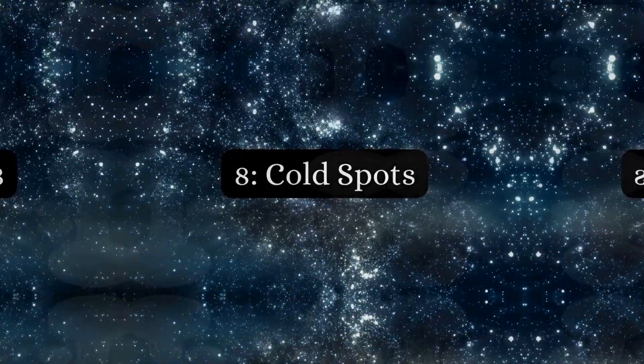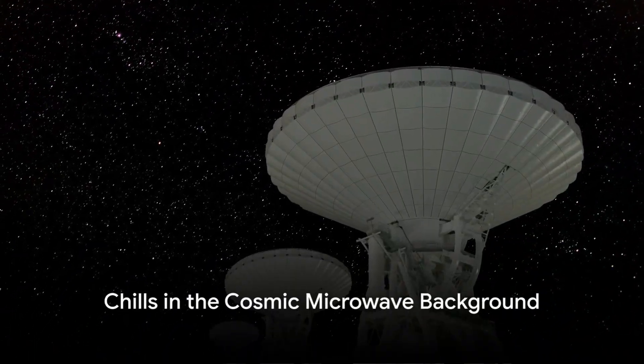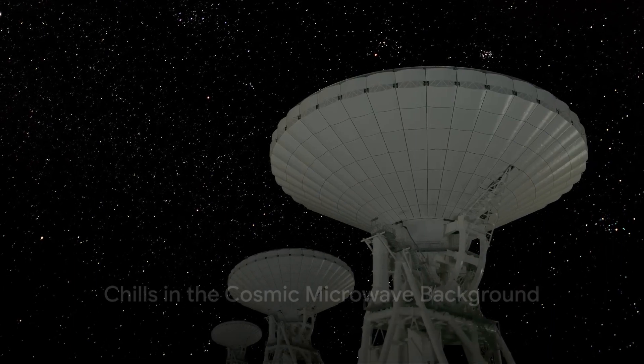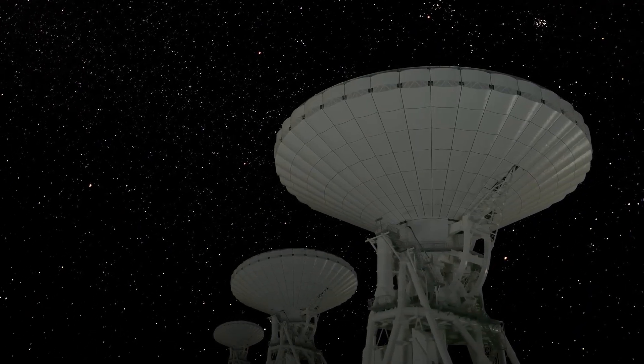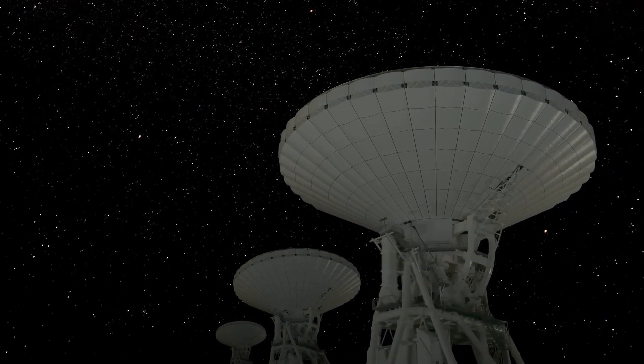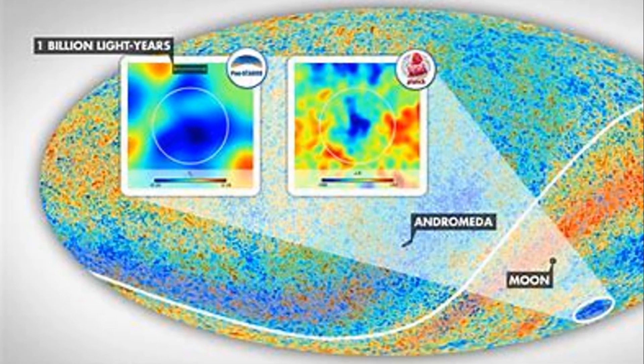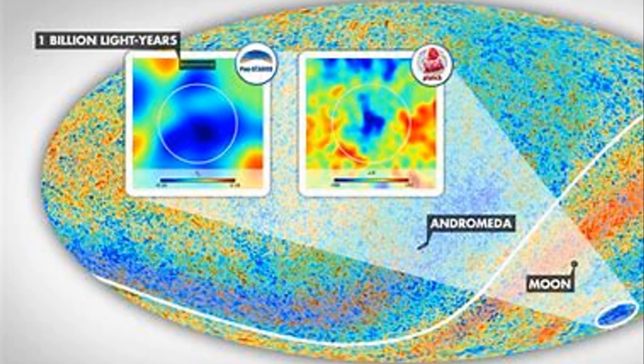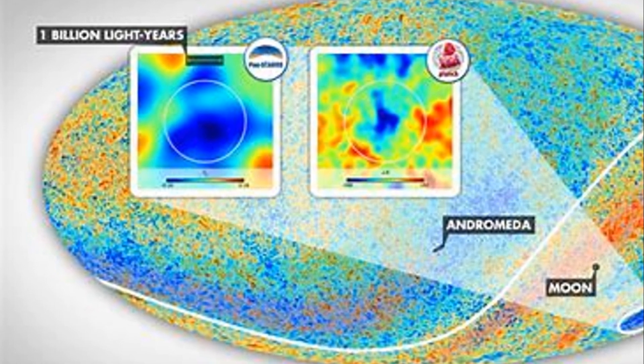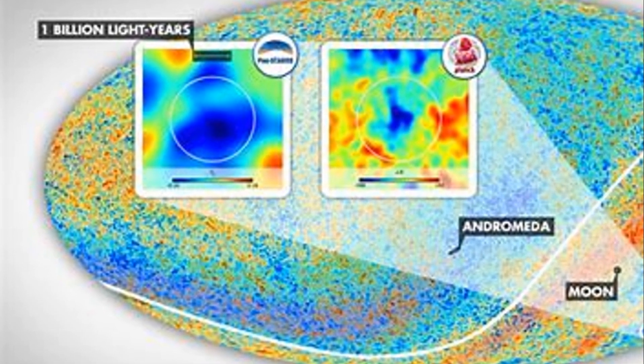Coming in at number 8, cold spots. What could cause chills in the cosmic microwave background? In the grand tapestry of the cosmos, there are peculiar patches that seem to defy explanation. The cosmic cold spots. Discovered through meticulous observations of the cosmic microwave background, or CMB, these enigmatic areas are significantly chillier than their surroundings. The most famous of these, the CMB cold spot, is a vast, inexplicably colder region that has left scientists scratching their heads.